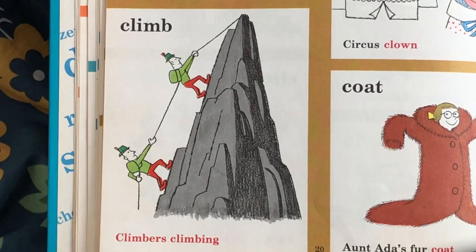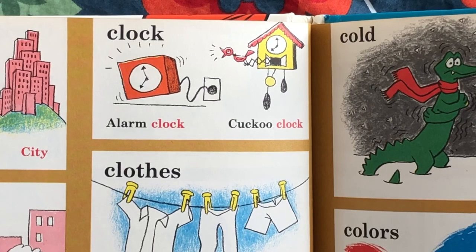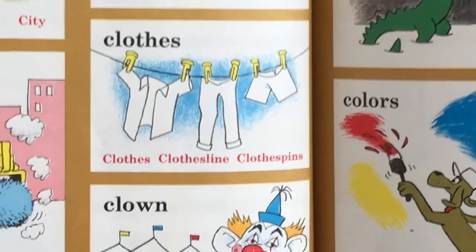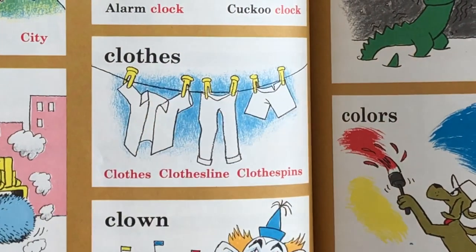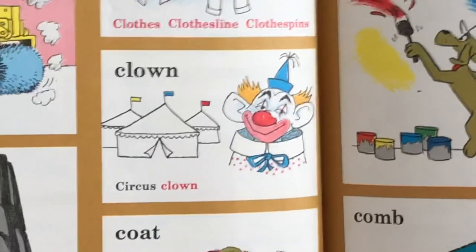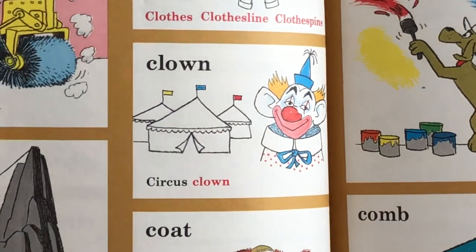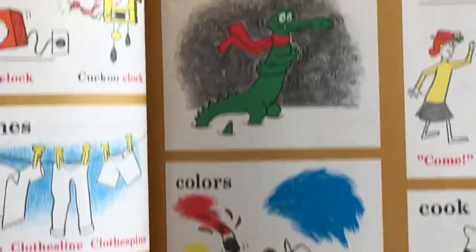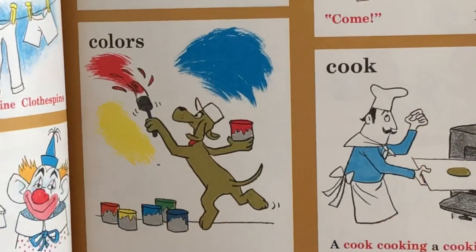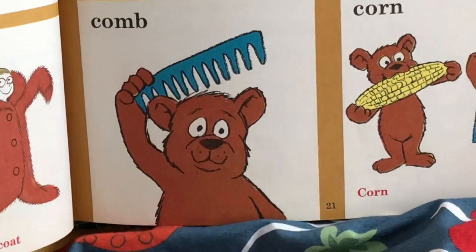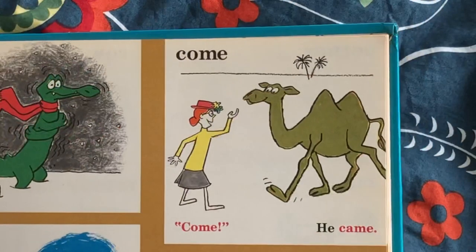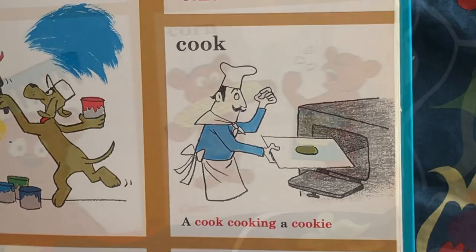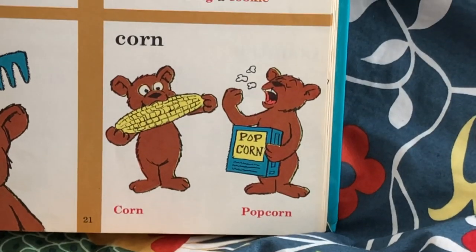Climb — climbers climbing. Clock. Alarm clock. Cuckoo clock — cuckoo. Clothes. Clothes line. Clothes pins. Clown — circus clown. Coat — Aunt Ada's fur coat. Cold. Colors. Comb — that's a big blue comb. Come. He came. Cook — a cook cooking a cookie. Corn and popcorn.